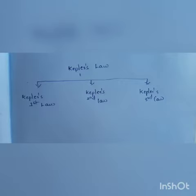First, what is Kepler's Law? The law which describes planetary motion is said to be Kepler's Law. There are three types in Kepler's Law: Kepler's 1st law, 2nd law, and 3rd law.